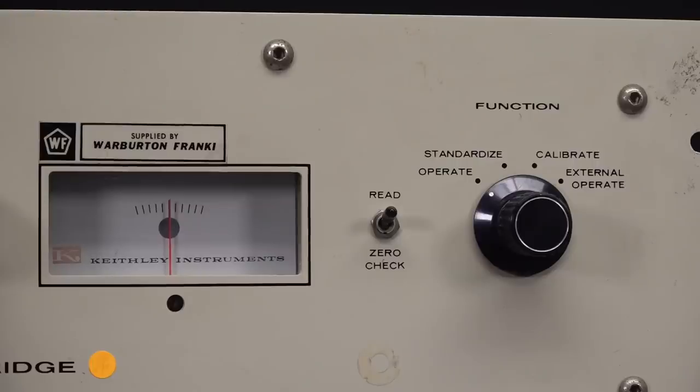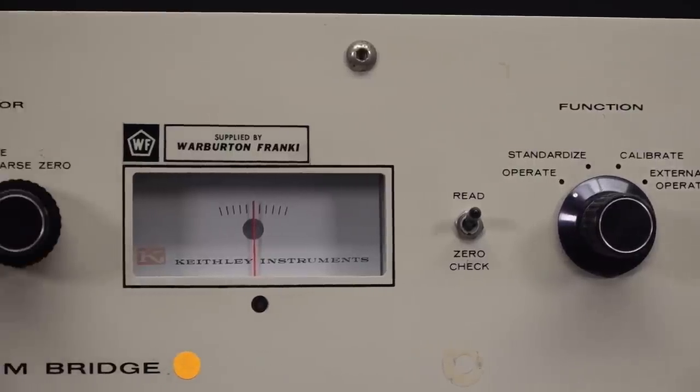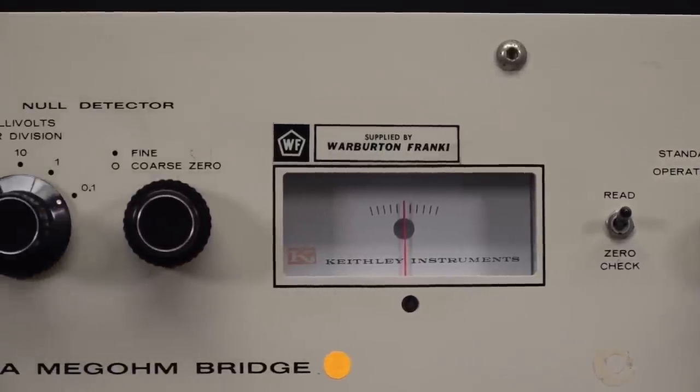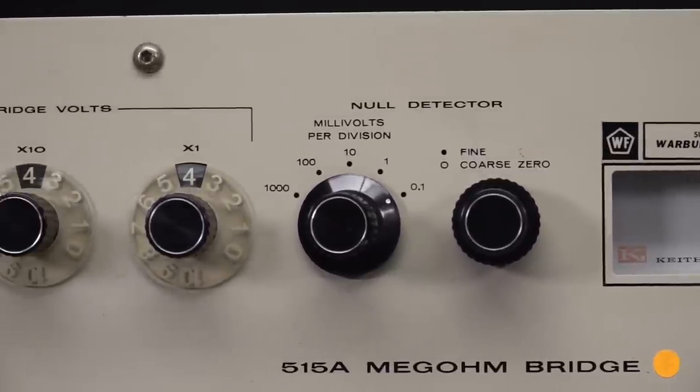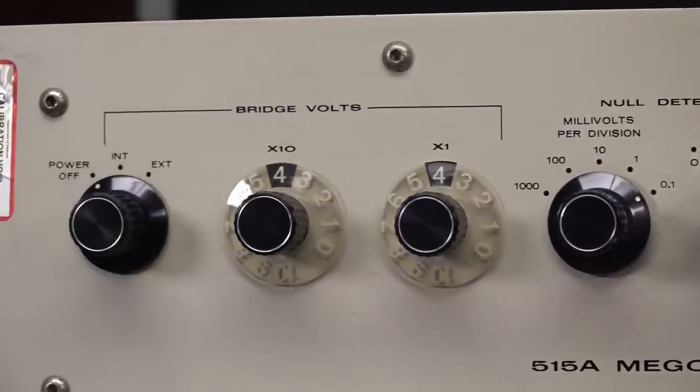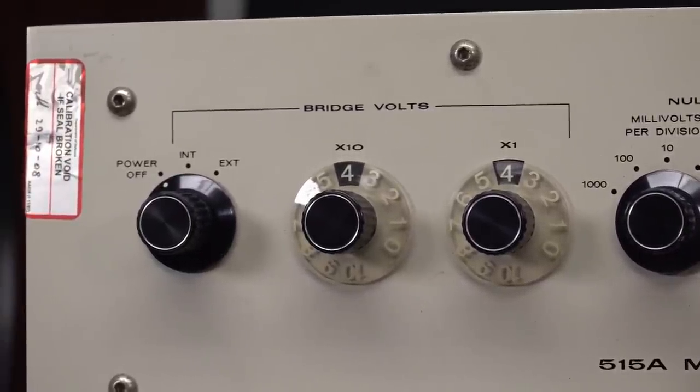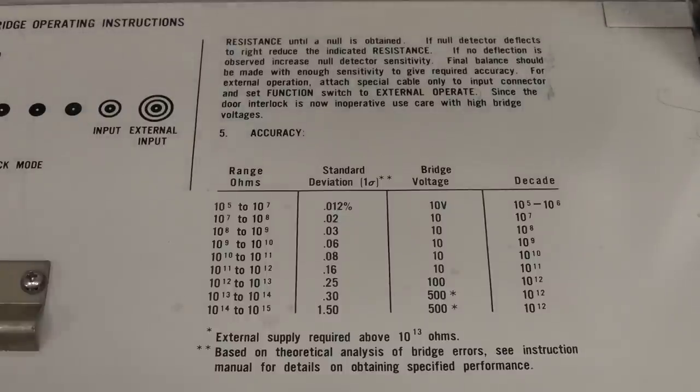And it's got calibration modes. And there is the null meter for you null meter fanboys. I know you're out there. And then you can actually set the null range and stuff. And you can set the bridge voltage. It can do internal or external voltages up to 1,000 volts. And there's your specs of this bad boy.